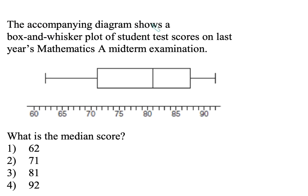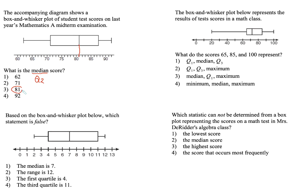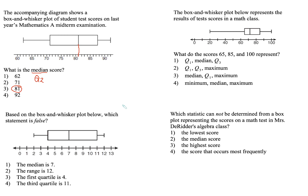The accompanying diagram shows a box and whisker plot of students' test scores on last year's Mathematics A midterm examination. They're asking for the median score. Remember, the median score is your Q2. That is at 80-something — looking more carefully, 81. That's your answer.